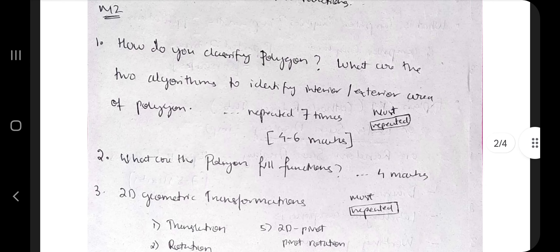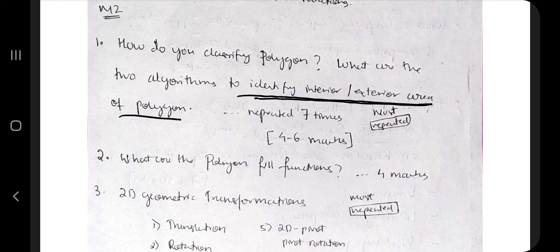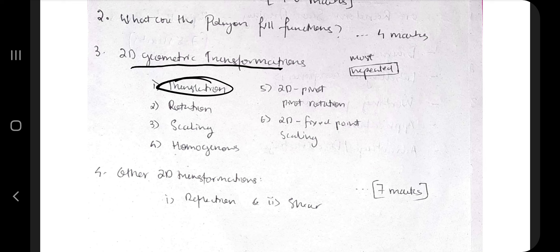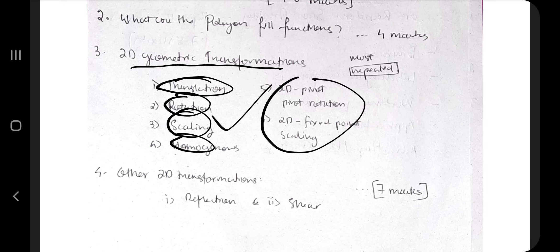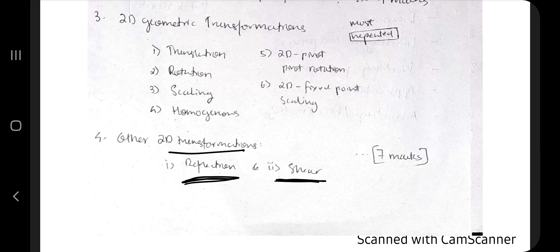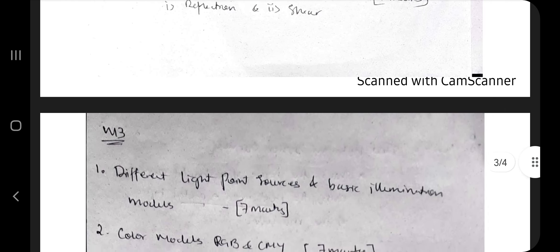Moving on to Module 2, the main concepts are polygons and 2D transformations. In polygons, the most important one — the first gem of this module — is the identification of interior and exterior area of a polygon. The next gem is the 2D transformation functions. In the theory part, you need to know what each geometric transformation means, the equations, and the matrix values for each. You cannot miss any of these. Other 2D transformations also require both theory and matrix equations.